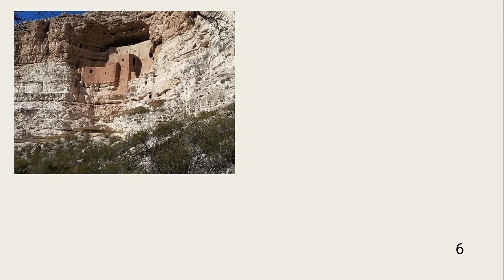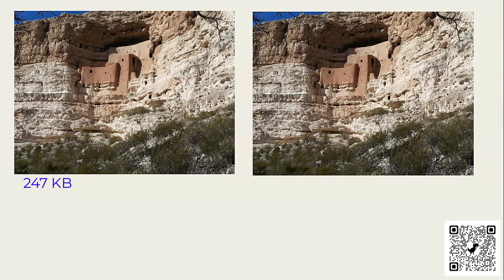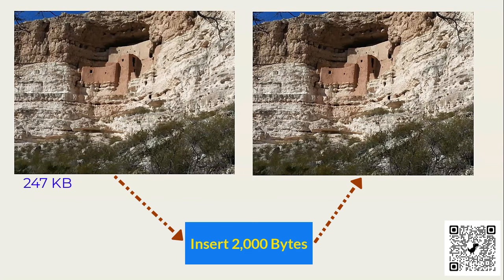In this example, I used this photograph in JPEG format. I used the online steganography tool at the QR code shown to insert about 2,000 characters into it. Notice that there is no noticeable difference between the unmodified and the modified photo. It changed the size of the original file, however, from 247K to 1.3 megabytes.